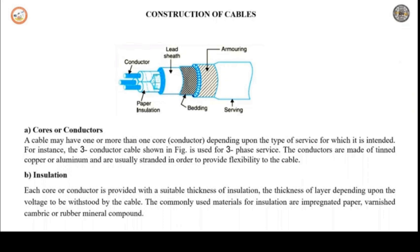First is the conductor or core. This section consists of a single conductor or more than one conductor. The conductors are also called as cores. A cable with three conductors is called a three core cable. The conductors used are aluminum or annealed copper, and they are stranded conductors in order to provide flexibility to the cable.